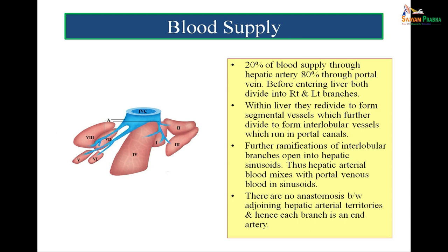Now we come to the blood supply of the liver. 80% of blood supply to the liver is by the portal vein and 20% is by the hepatic artery. Before entering the liver, both the portal vein and the hepatic artery divide into right and left branches. Within the liver, they re-divide to form segmental vessels, which further divide to form interlobular vessels running in portal canals. Further ramifications of interlobular branches open into hepatic sinusoids, where the hepatic arterial blood mixes with the portal venous blood. There is no anastomosis between adjoining hepatic arterial territories and hence each branch is an end artery.